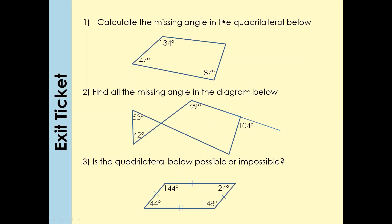For this quadrilateral, although the angles do add up to 360°, the shape is impossible. It does not satisfy the conditions of a parallelogram: adjacent angles must add up to 180°, which is not the case here, and diagonally opposite angles must be equal, which is also not satisfied. So this quadrilateral is impossible.